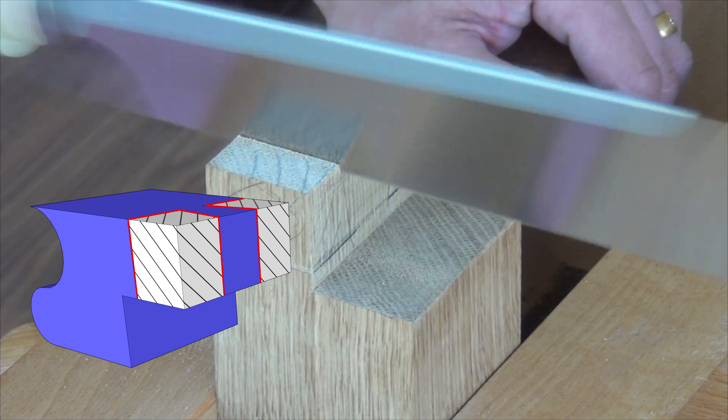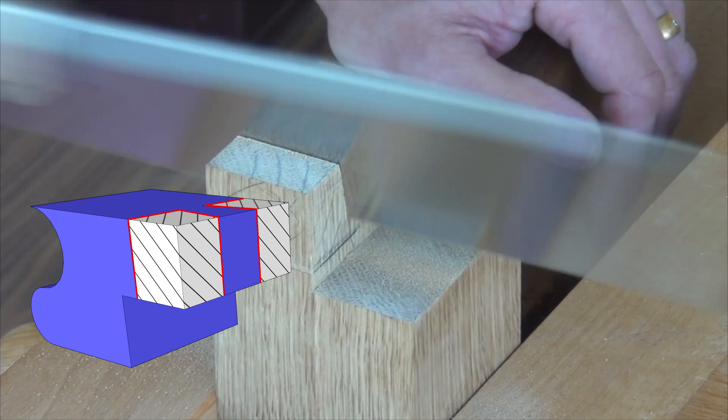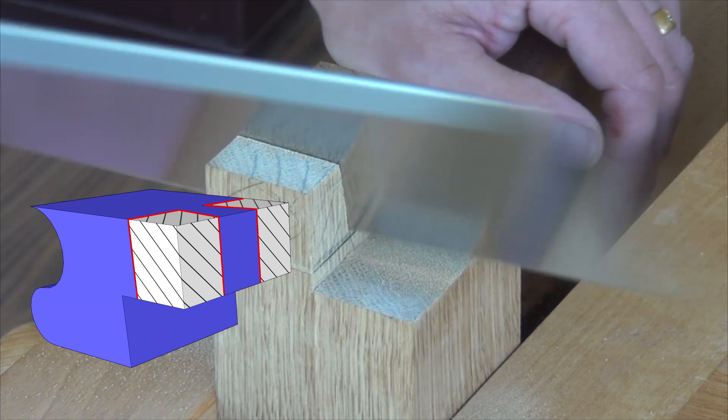Now we cut the tail of the dovetail, and the reason for cutting the male part first is that we'll be using this as a pattern for the female.